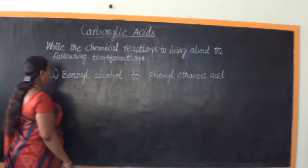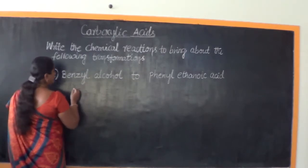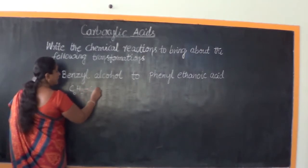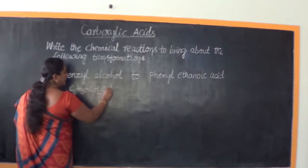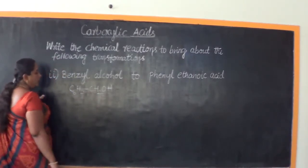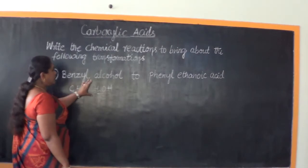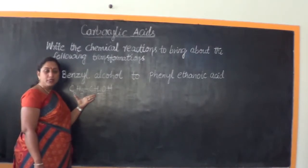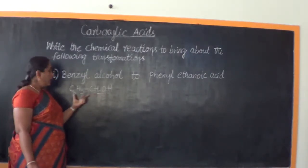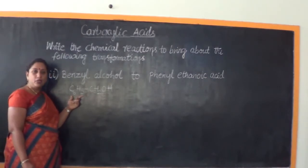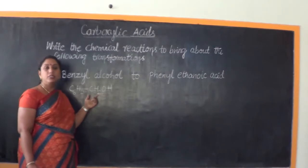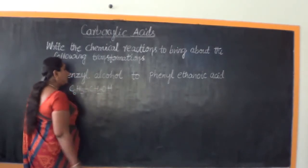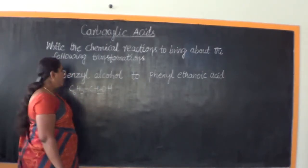Let us go about that in detail. Let us write the formula of benzyl alcohol: C6H5CH2OH is the formula of benzyl alcohol. This is the benzene ring to which CH2 is attached. C6H5CH2 is called the benzyl group, just like how C6H5 is called the phenyl group. The OH attached to the benzyl group gives us benzyl alcohol.